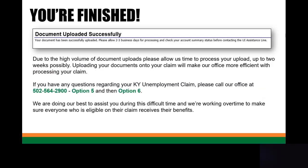And now you're finished. Due to the high volume of document uploads, please allow us time to process your upload — up to two weeks possibly. Uploading your document onto your claim will make our office more efficient with processing your claim and other claims. If you have any questions regarding your Kentucky Unemployment Insurance claim, please call our office at 502-564-2900, option 5 and then option 6. We're genuinely doing our best to assist you during this very difficult time, and we're working overtime to make sure everyone who is eligible on their claim receives their benefits. Please take care, Kentucky.